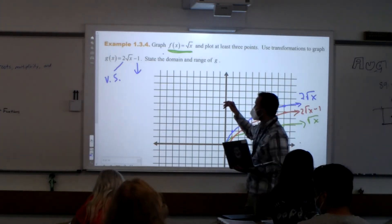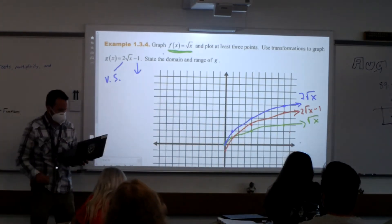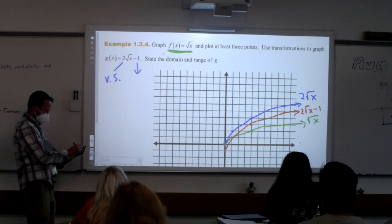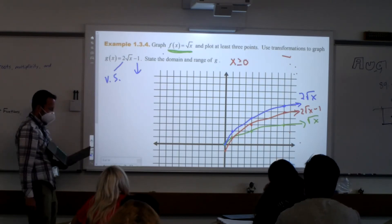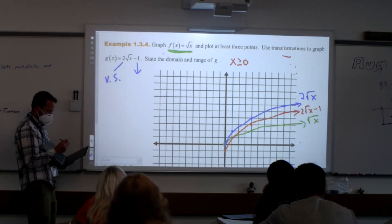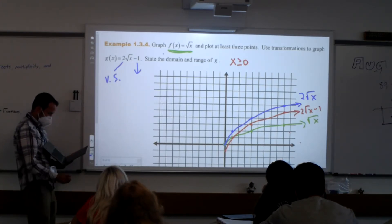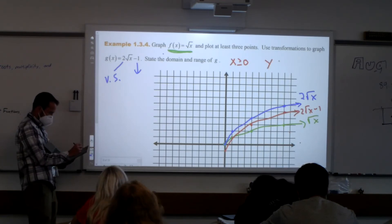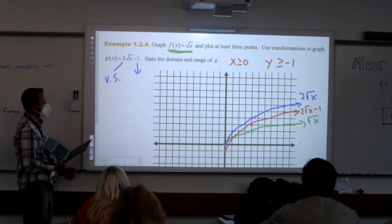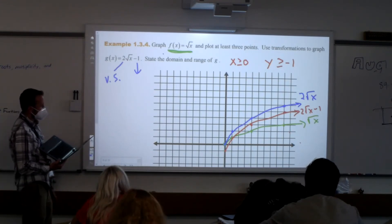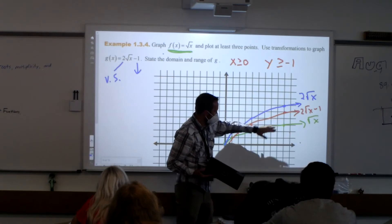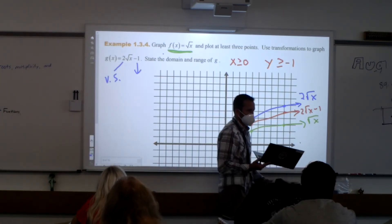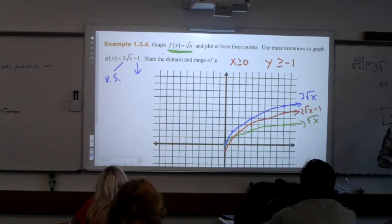It also asks for the domain and range. Looking at the red one, where do we start seeing x values? At 0 — and we include 0 — then it goes from there. So the domain is x greater than or equal to 0. What about the y values? You start at negative 1 and then go from there. Green is our parent function, we stretched it up to the blue one, and then shifted it down to the red one. You've done this before, right? Let's keep on going to find ones that may be a little more challenging.